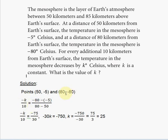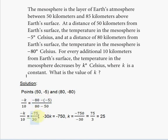So we get: minus 80 minus negative 5, divided by 80 minus 50, equals minus k over 10. Simplifying: two negatives give a positive, so minus 80 plus 5 is minus 75, divided by 30. So minus k over 10 equals minus 75 over 30.